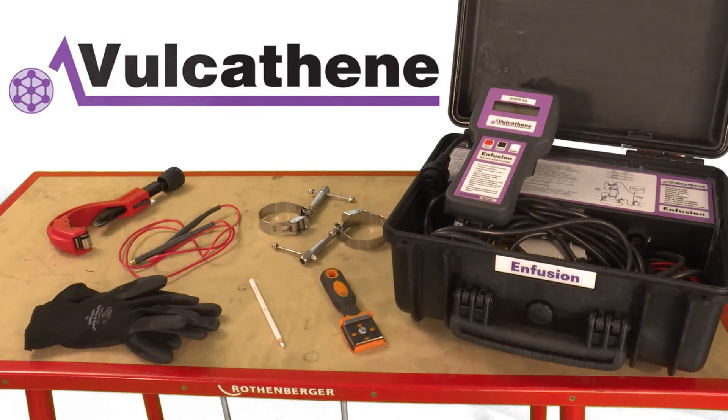The equipment you'll need to perform reproducible jointing of Vulcathene infusion includes pipe cutter, scraper, clamps, link cables for multiple jointing, infusion control unit, and gloves.